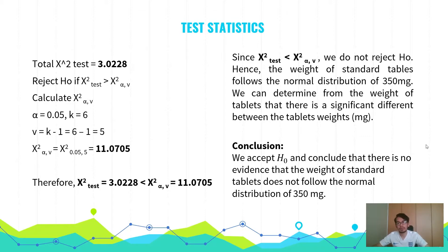Since the chi-square test statistic is less than the chi-square critical value, we do not reject H0. Hence, the weight of the standard tablet follows the normal distribution of 350 mg. The conclusion is that we accept H0 and conclude there is no evidence that the weight of standard tablets does not follow the normal distribution of 350 mg, meaning that the Raja Kurya Eye tablet follows the standards determined by the authority. Thank you.